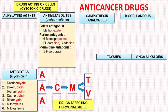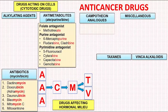In pyrimidine antagonist, we have 5-fluorouracil, cytarabine, capecitabine, and gemcitabine. We see that the drugs ending with -bine all fall in this group. Next we discuss the C, i.e. camptothecine analogues. We have two members here: topotecan and irinotecan. Thecine and -tecan sound similar, easy to remember.